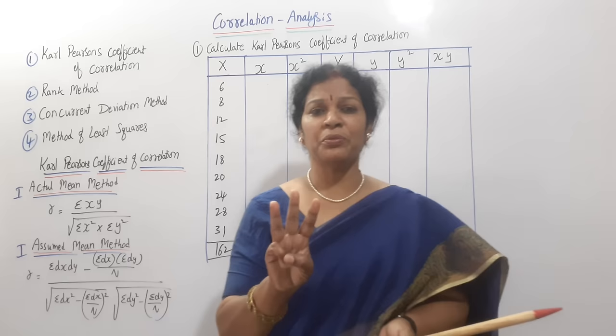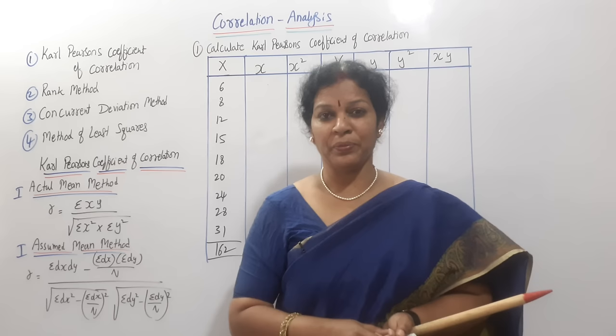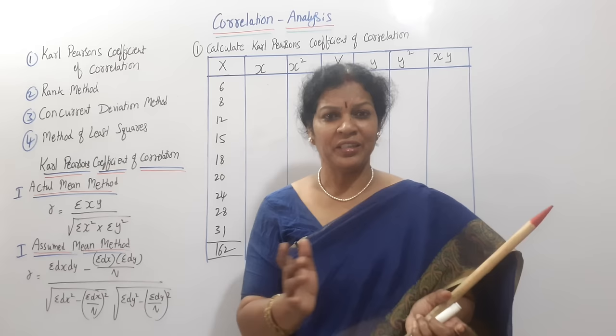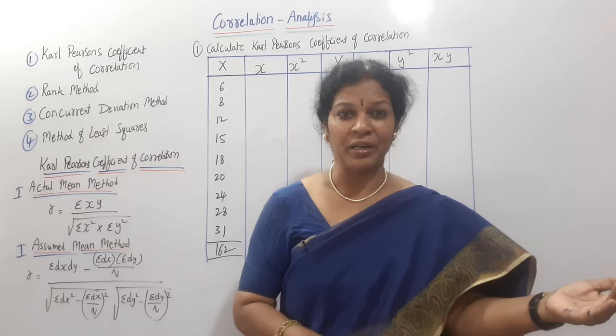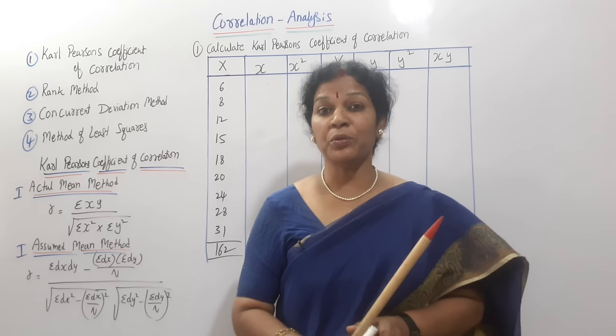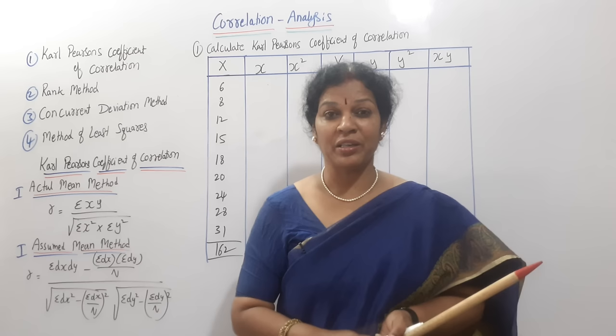As I told you — husband's age and wife's age, father's height and son's height correlation, and in the same way supply and demand correlation. Like any two variables we can take and find out the correlation between them. It is very easy to calculate; you just need to focus.